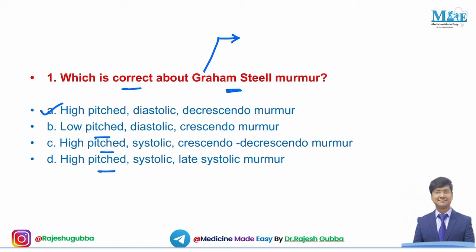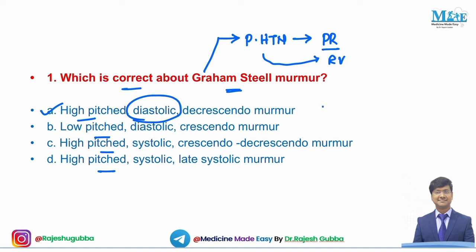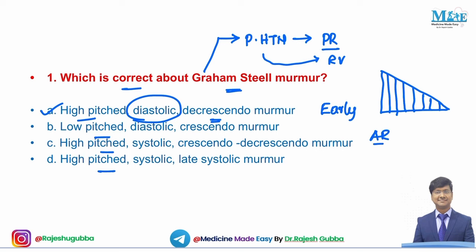Graham Steele's murmur is heard in patients with pulmonary hypertension. These patients develop functional pulmonary regurgitation, with blood moving from the high-pressure pulmonary artery into the low-pressure right ventricle — hence a high-pitched murmur. This occurs maximally in the early part of diastole, making it an early diastolic decrescendo murmur, where the intensity gradually decreases.